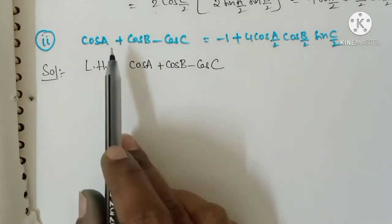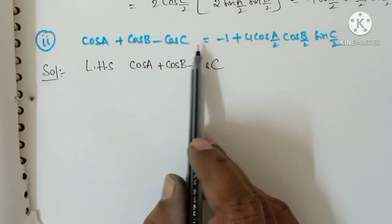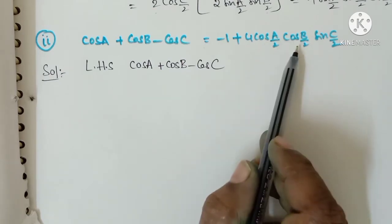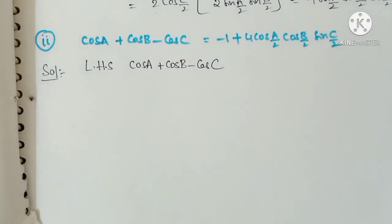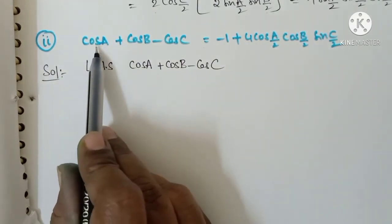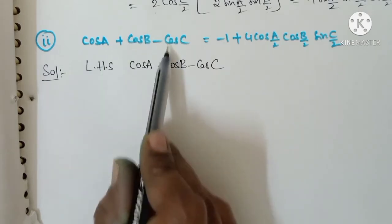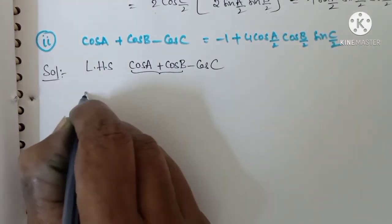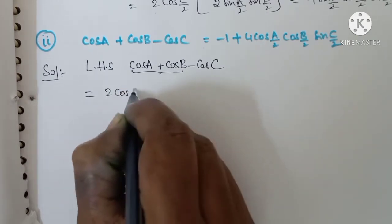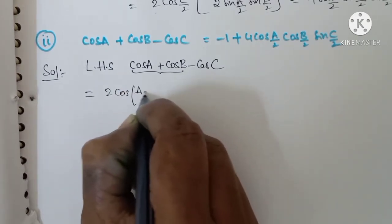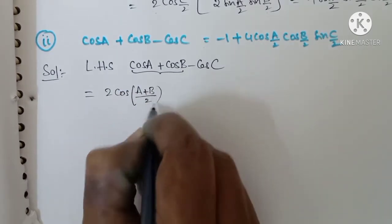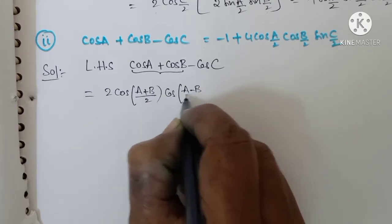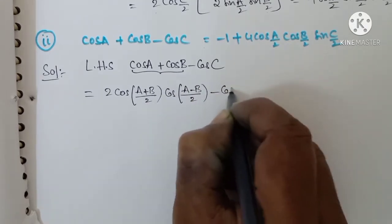Second bit: prove that cos A plus cos B minus cos C equals minus 1 plus 4 cos(A/2) cos(B/2) sin(C/2). We take LHS: cos A plus cos B minus cos C. Applying the formula, cos A plus cos B equals 2 cos((A+B)/2) cos((A-B)/2) minus cos C.